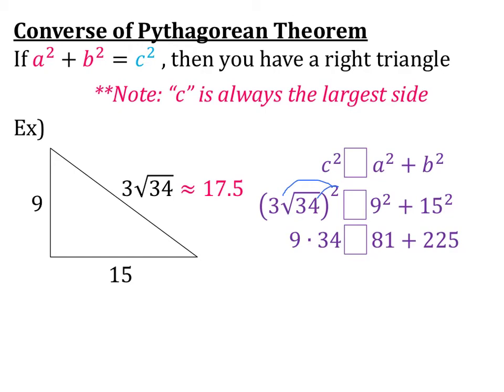So on my left, I have 9 times 34, and then on the right, 81 plus 225. So when I look at this, I see that 9 times 34 is 306, and 81 plus 225 is 306. So since our two values are equal, that means that, yes, this is a right triangle.